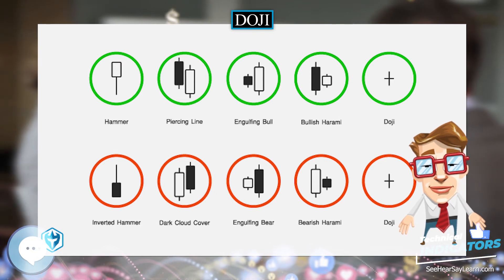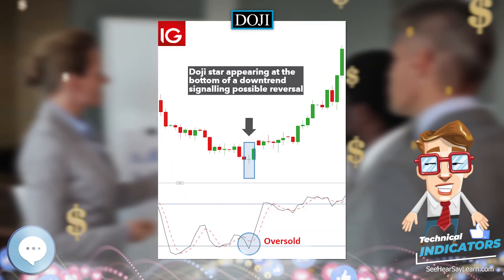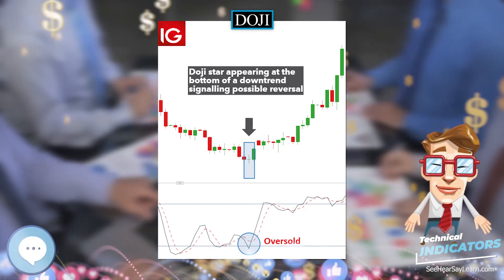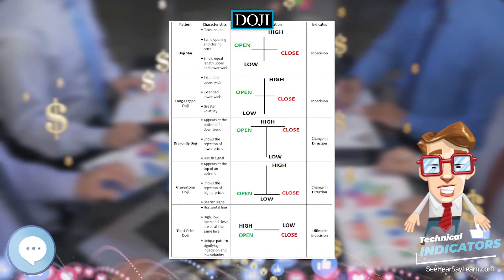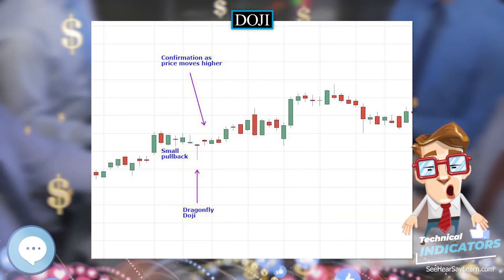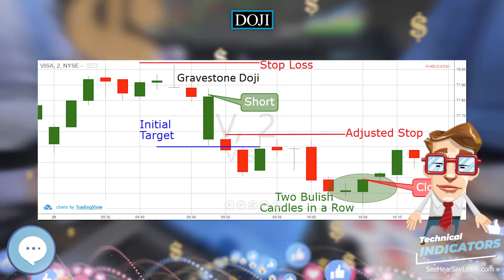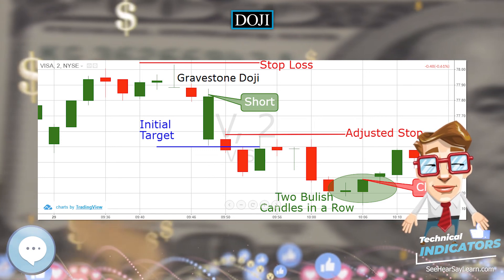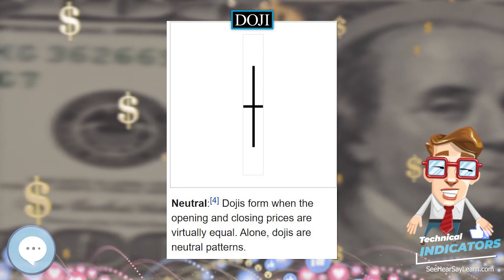Uses of the Doji indicator: A Doji indicator is mostly used in patterns, and it is actually a neutral pattern itself. Thus, when used alone, it doesn't provide reliable signals. By itself, the Doji candlestick only shows that investors are in doubt. However, there are main patterns that can be easily found on the chart. Specifically, there are two patterns purportedly providing trend confirmation.